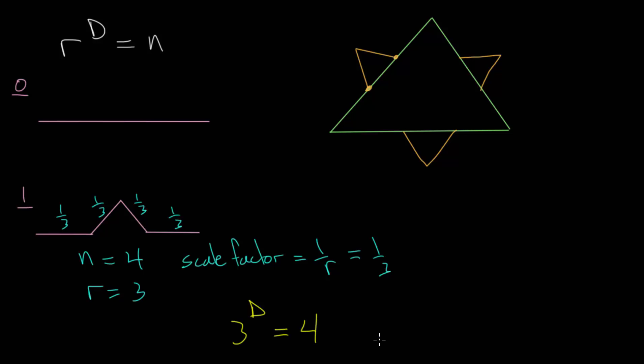This is an exponential equation. We're asking ourselves, what do we raise three to to get four? But another way to phrase this is that this is logarithmic. When we have a to the b is equal to c, the logarithmic version of this exponential equation is that log base a of c is equal to b. We can say that log base three of four is equal to d, which is the exponent. Remember that logarithms are just exponents.